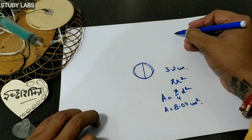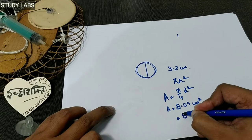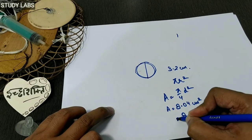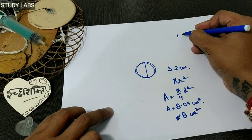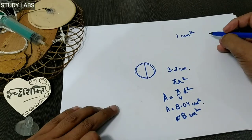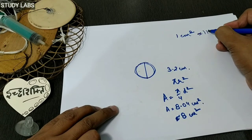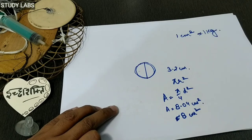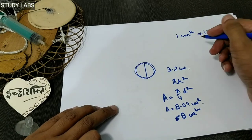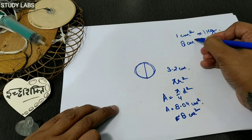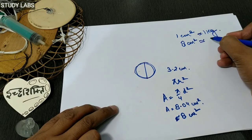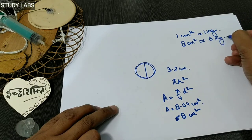Now, because we know that 1 cm² has atmospheric pressure equivalent to about 1 kg of force, if the area is 8 cm², the force is about 8 kg.